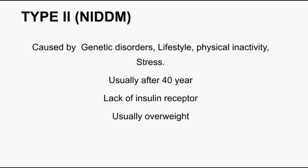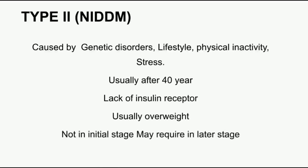In Type 2, insulin receptors are not responding properly. Usually, the patient is obese or overweight, and BMI is elevated. Initially, the patient may still have some insulin. In the later stage, insulin may be required. The symptoms of Type 2 are very slow in onset, and complications develop in the later stage.